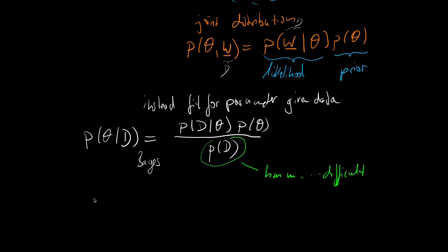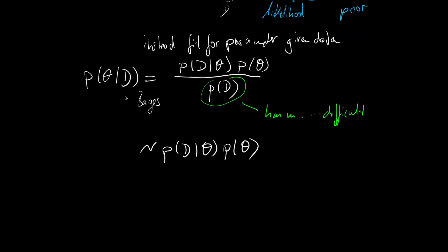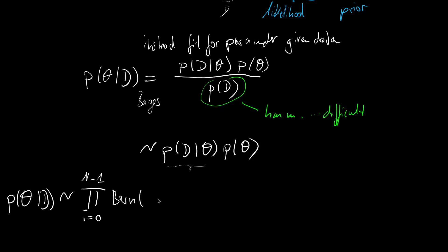We say the posterior is proportional to p of D given theta times p of theta. We can now plug in our distributions. The posterior p of theta given data is proportional to a product from i=0 to n-1 over the Bernoulli of the i-th observation given theta, multiplied by the beta distribution of theta given our defined parameters alpha and beta.